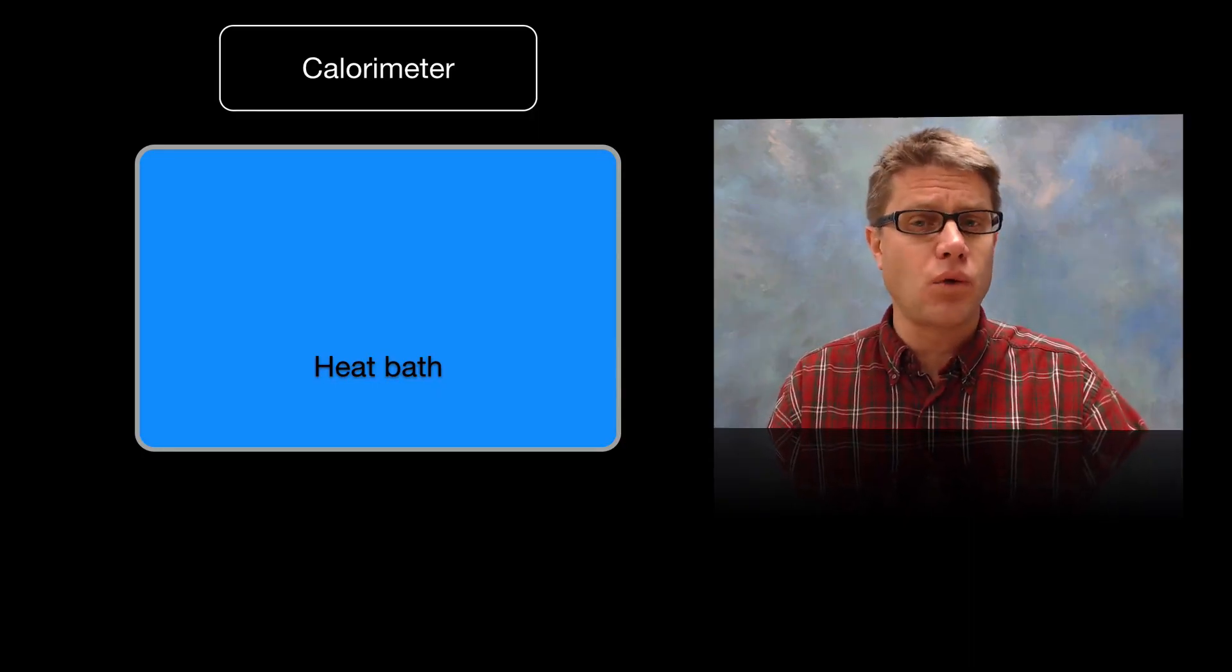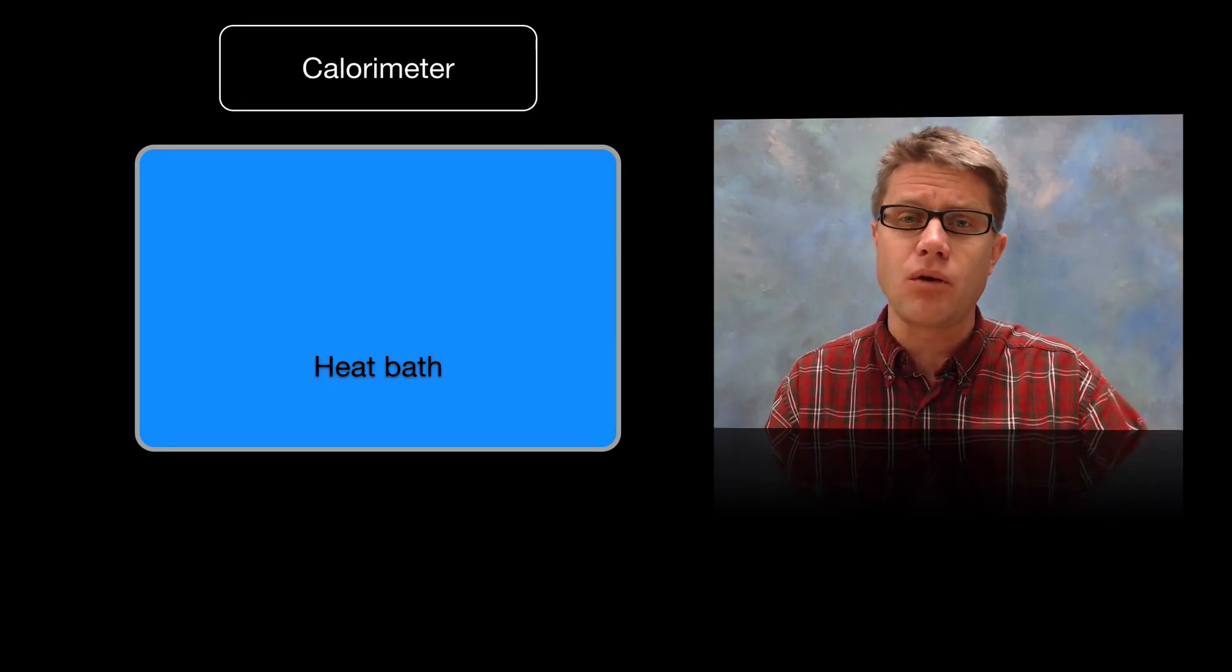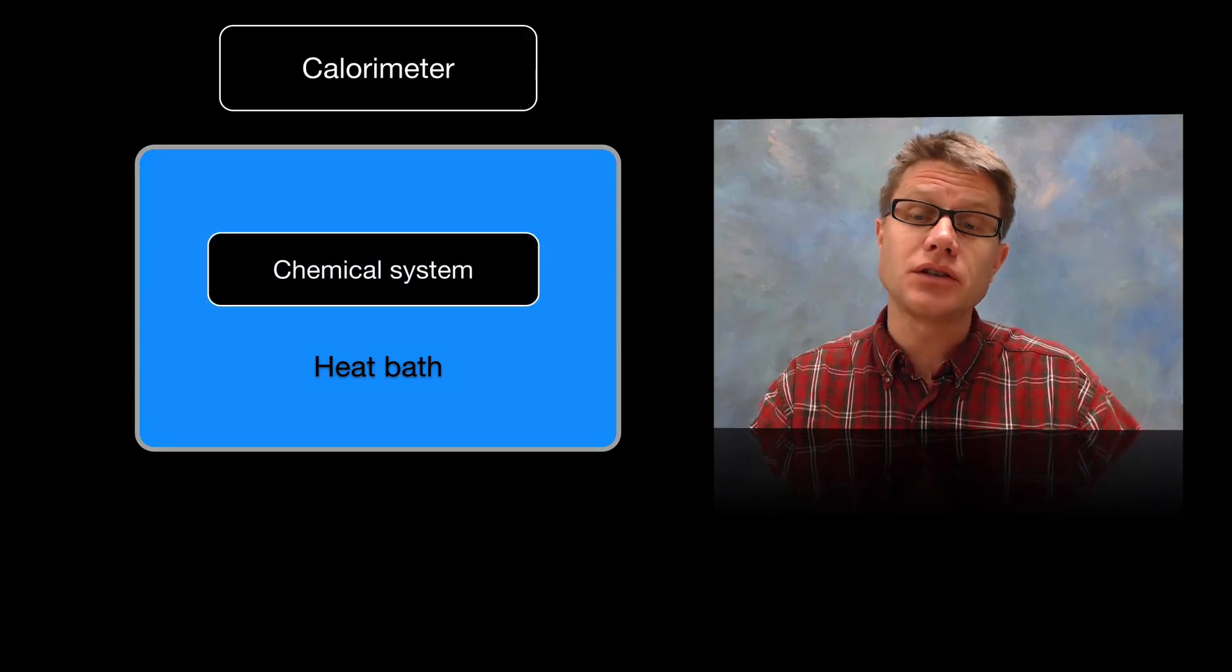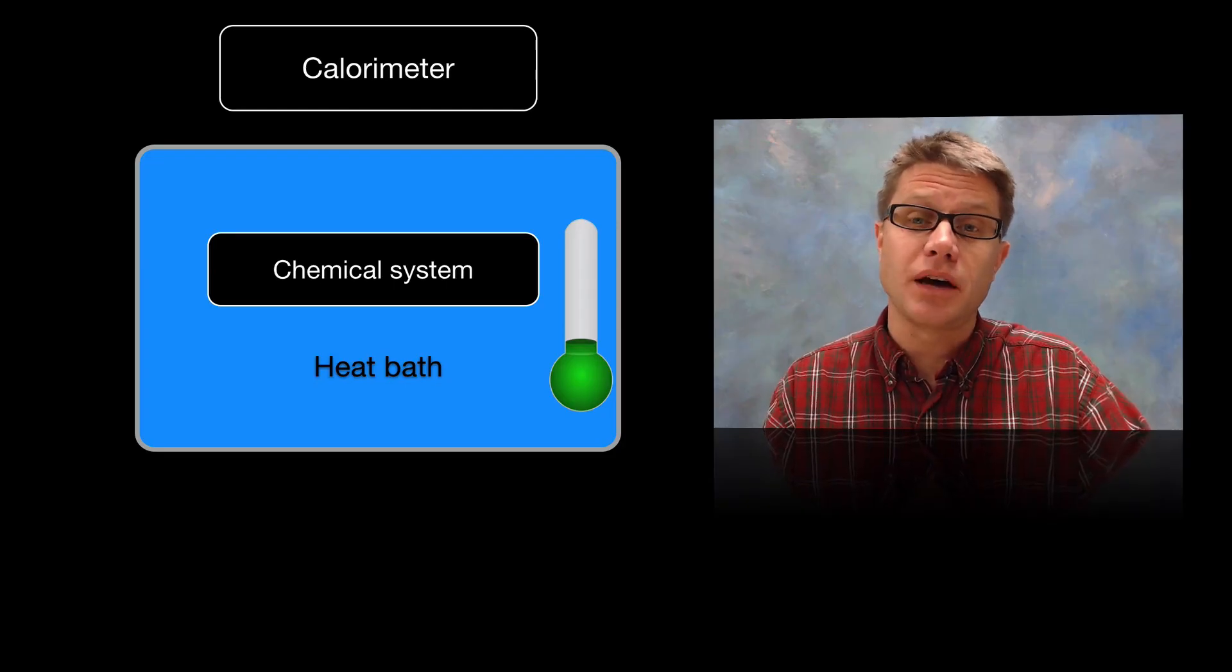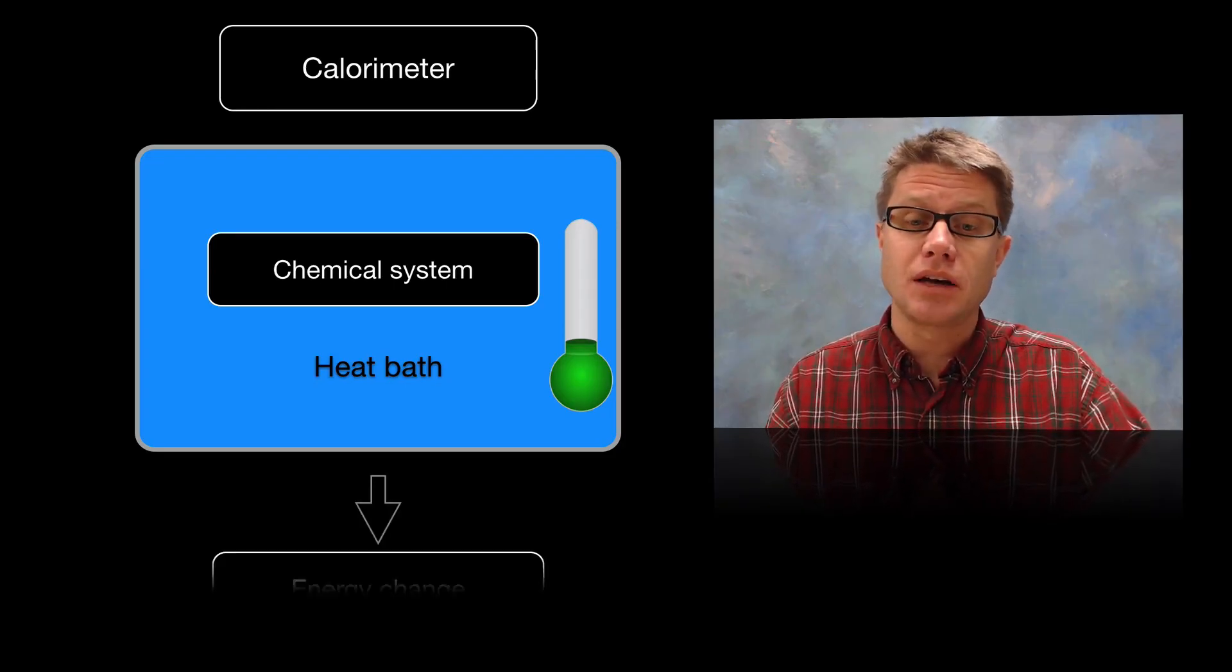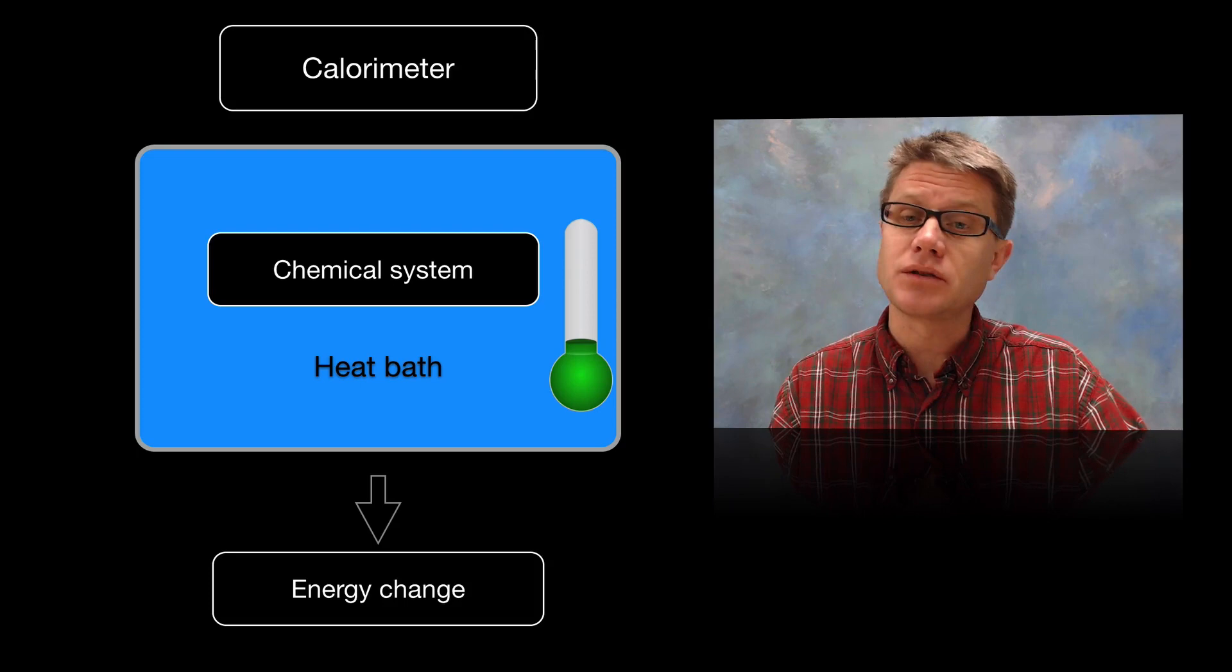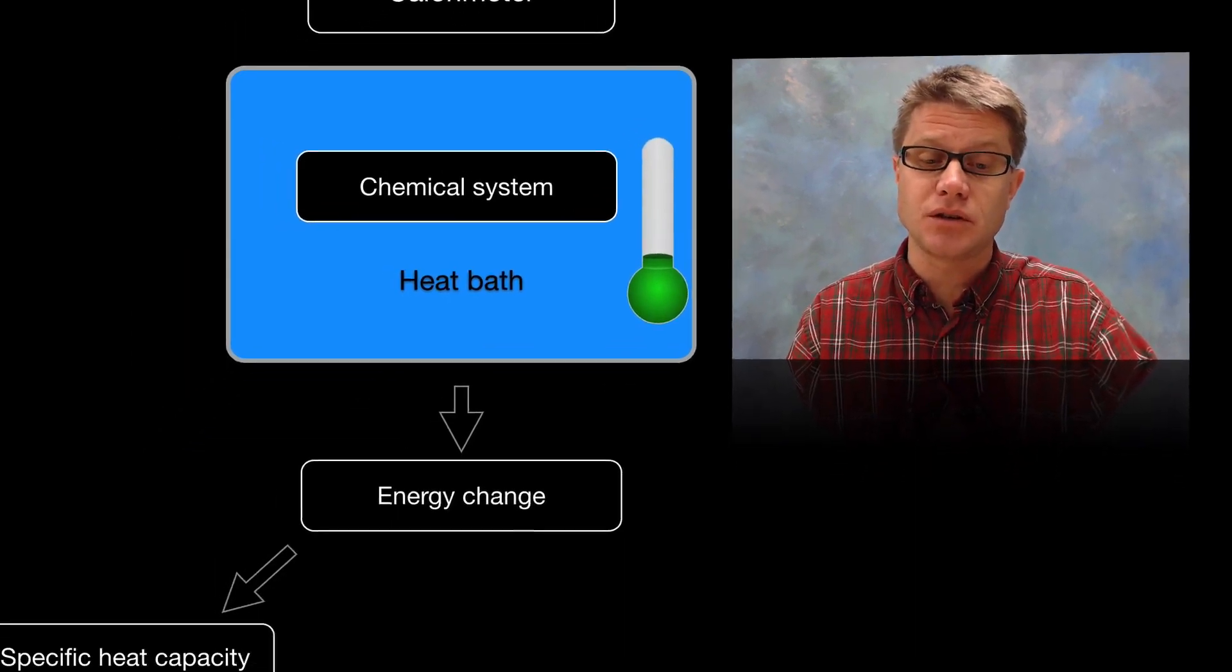And that generally is made of water, because we know specifically how water changes over time. And then you're going to have a chemical system that's placed inside of that. We need a thermometer inside that heat bath so we can measure what's happening as we get changes of energy within it. And so we can measure energy change from that chemical system.